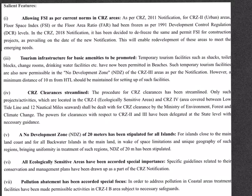The 2019 rules have also brought some other significant changes. These modifications allow some tourism infrastructure to be built in coastal areas, including temporary tourism facilities such as shacks, toilet blocks, change rooms, and drinking water facilities on beaches. The procedure for CRZ clearances has also been streamlined.